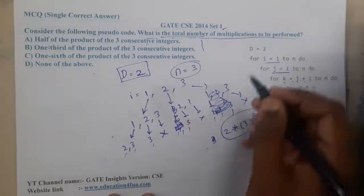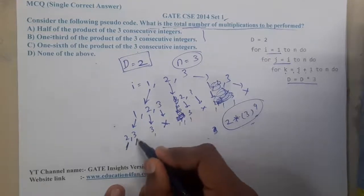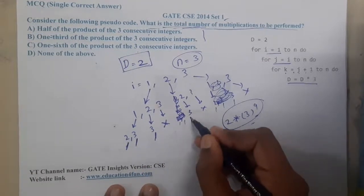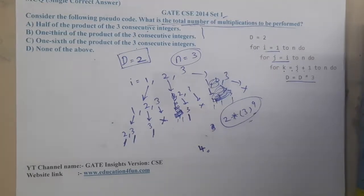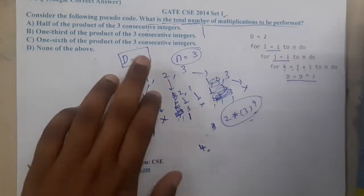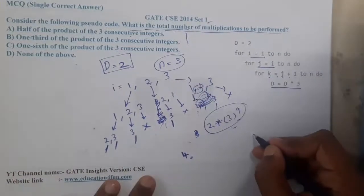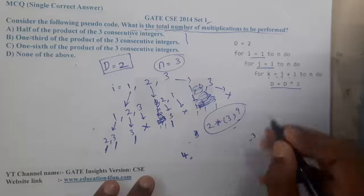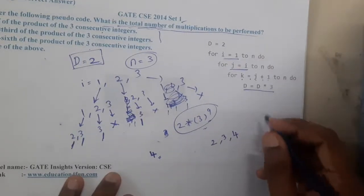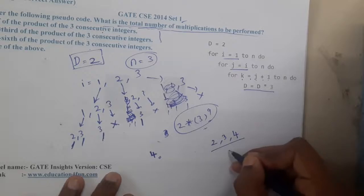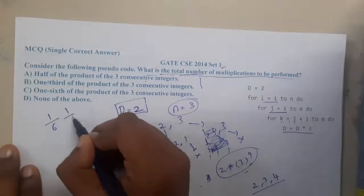Now let us count. The question is the number of multiplications. Here you will have 1 multiplication, 2 multiplications, 3 multiplications, 4 multiplications. So in total there occurred 4 different multiplications. They are saying consecutive numbers. Let us add 3. Two consecutive three consecutive numbers means before we will have 2, after we will have 4.